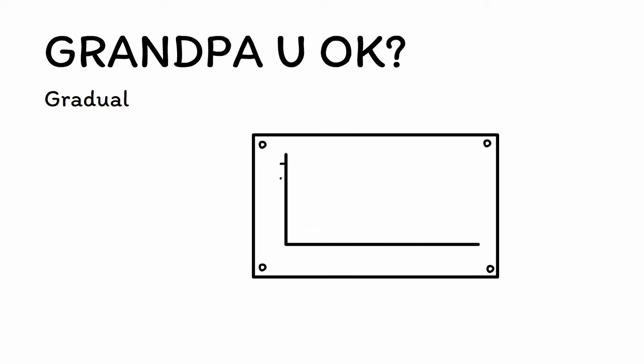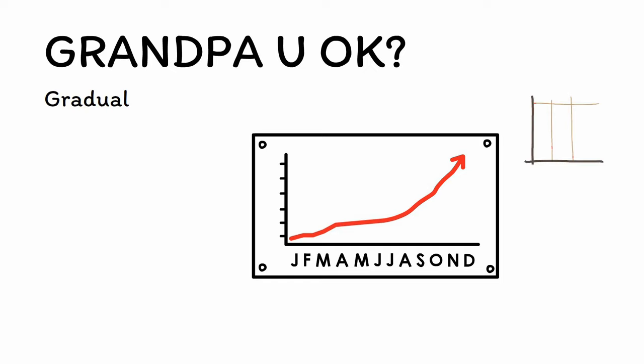First, G is for gradual. A hallmark of Alzheimer's disease is that it has a gradual and insidious onset, with subtle deficits accumulating over months or even years before diagnosis. This contrasts with other causes of memory loss, such as delirium, which are more often sudden or dramatic in onset.